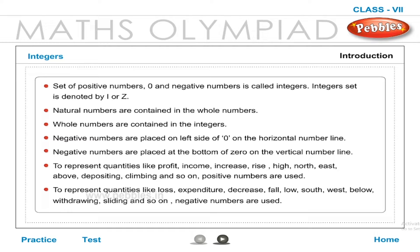Negative numbers are placed on the left side of 0 on the horizontal number line. Negative numbers are placed at the bottom of 0 on the vertical number line.